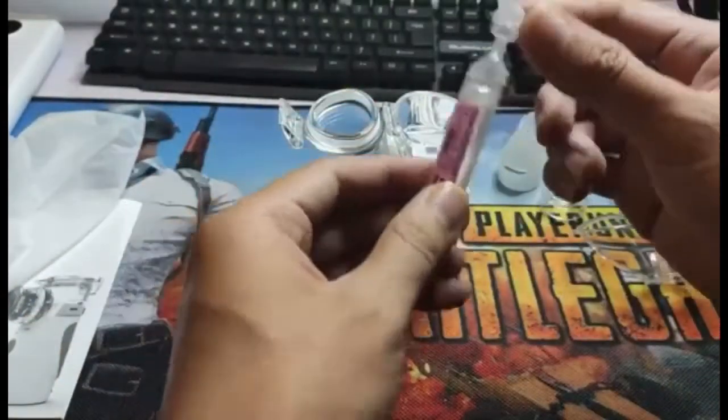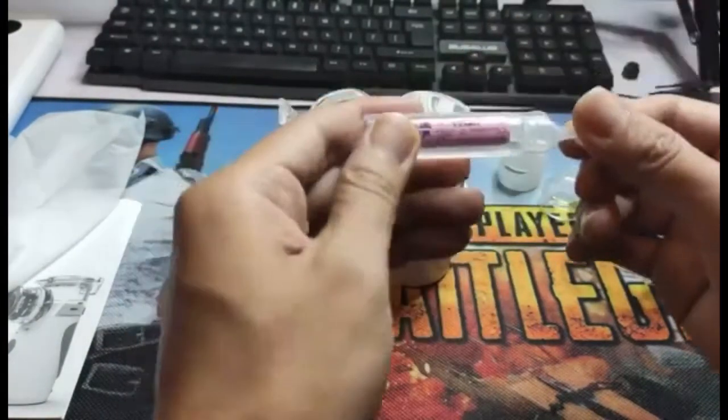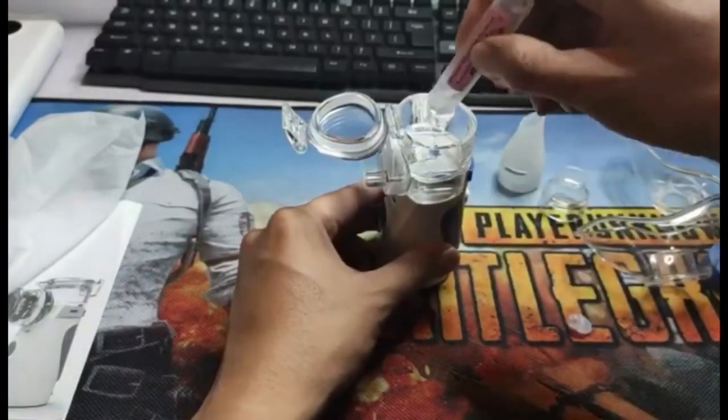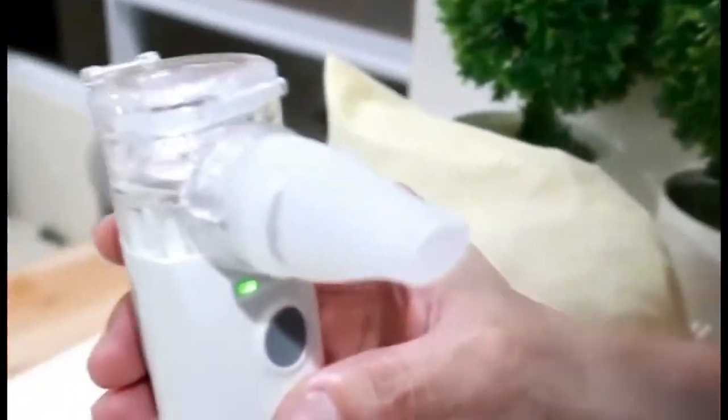Once you have all your equipment ready, the next step is to put your medication in. Just twist off the cap, squirt it in there, add your mouthpiece, and then turn the device on. When you turn it on, you'll see a mist.